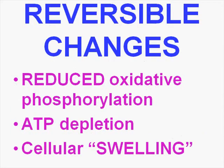Some of the classic reversible changes would be a reduction in oxidative phosphorylation, a reduction therefore in the production of ATP, and cellular swelling. These are all reversible changes. Your mitochondria can be damaged and produce decreased amounts of ATP, resulting in reduced oxidative phosphorylation, but it could be reversible.